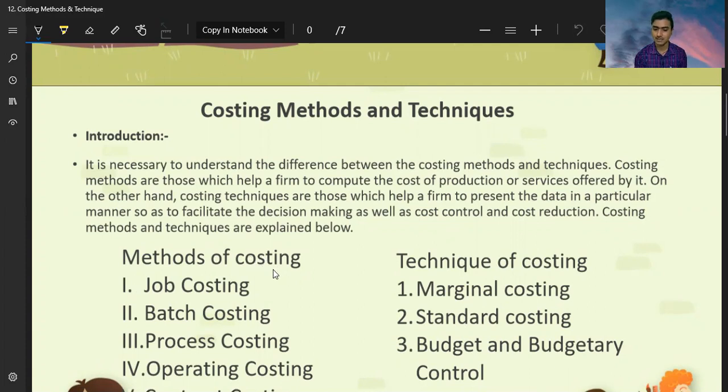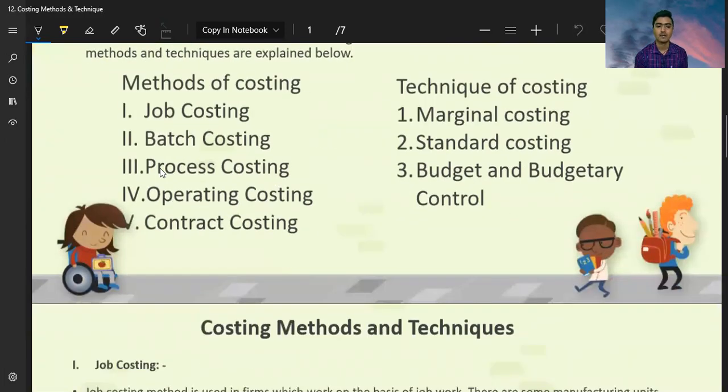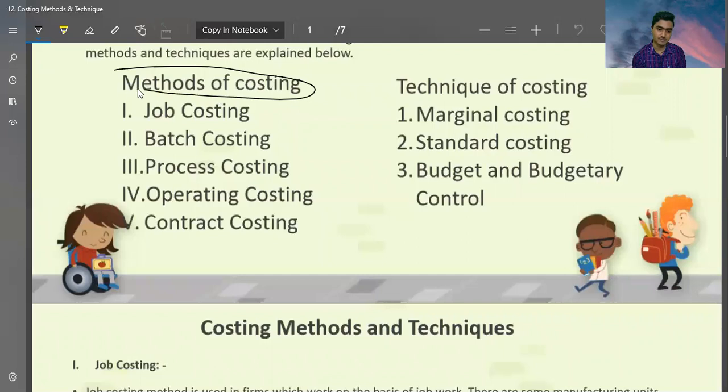Now let's talk about methods. Costing methods are job costing, batch costing, process costing, operating costing, contract costing. These methods are the same. The different industries follow these methods. In addition to other methods, there are also five methods. So, to talk about methods across the time and costing methods: marginal costing, standard costing, budget and budgetary control. These are three techniques, which are the best methods of costing.